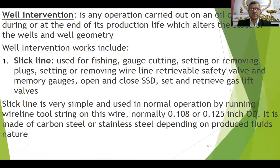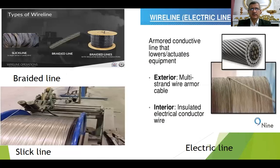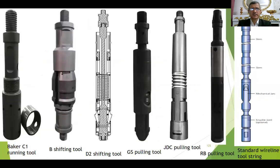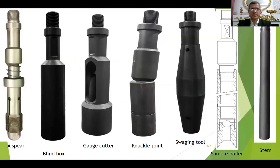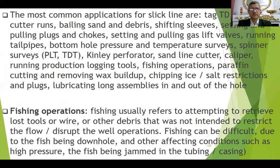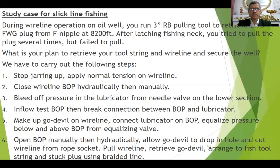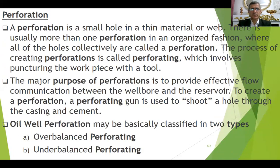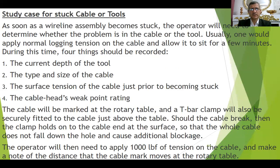Well intervention includes slick line — we'll go into detail. These are the types of wireline: slick line, electric line, and braided line. Slick line and the tools — standard wireline tools that can be run, all of these. Then fishing operations, study case, braided line and how to use it, and E-line — we have logging, perforation, and water shut-off. We'll talk about perforation and a study case for stuck cable or tools.